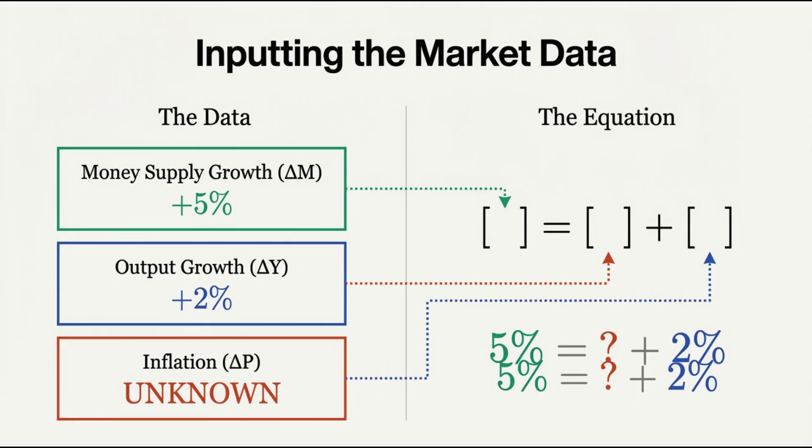That has to equal P, which is the overall price level, times Y, which is the real economic output. Think of it as a scale that has to stay balanced for the whole economy.